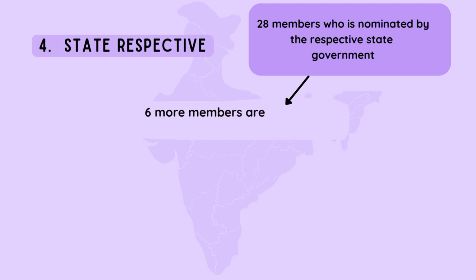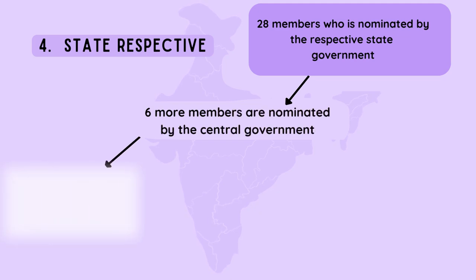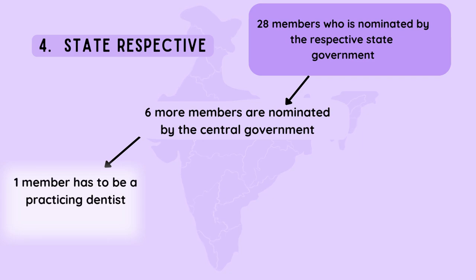Six more members are nominated by the central government. According to the rules, one member out of these six has to be a practicing dentist, as seen in this picture, or one who is training students in a college.